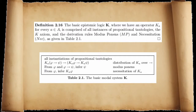Axiomatization: A logic is a set of formulas. One way to characterize it is semantically — take a set of formulas that is valid in a class of models. An axiomatization is a syntactic way to specify a logic. Definition 2.16: The basic epistemic logic K, with operator K sub-A for every agent in A, is comprised of all instances of propositional tautologies, the K axiom, and the derivation rules modus ponens and necessitation, as given in table 2.1.